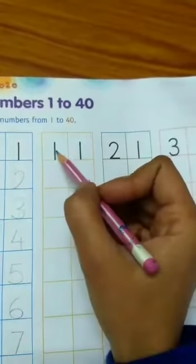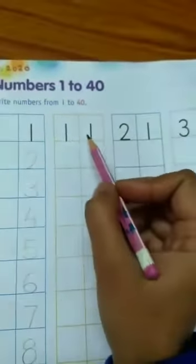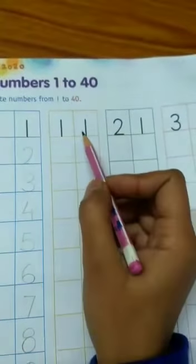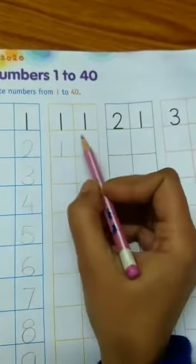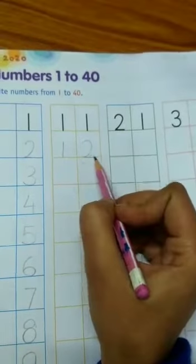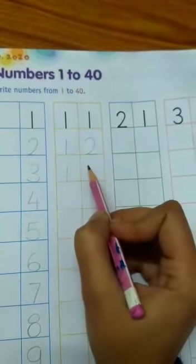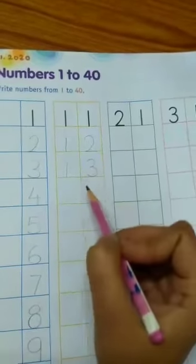What comes after 10? After 10 comes 1, 1, 11. See, it is already written in the book, so you don't have to write 11. Now write 12. What comes after 11? 1, 2, 12. After 12 comes 1, 3, 13.